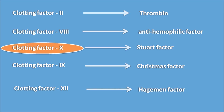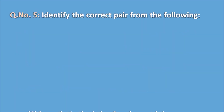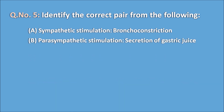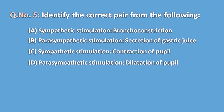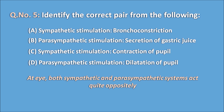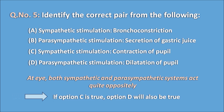Question five: identify the correct pair. Options are A. sympathetic stimulation produces bronchoconstriction, B. parasympathetic stimulation causes secretion of gastric juice, C. sympathetic stimulation produces contraction of pupil, and D. parasympathetic stimulation produces dilatation of the pupil. Since the sympathetic and parasympathetic systems act oppositely at the eye, if option C were true, option D would also be true — so both C and D are eliminated. The right answer is B: parasympathetic stimulation causes secretion of gastric juice.